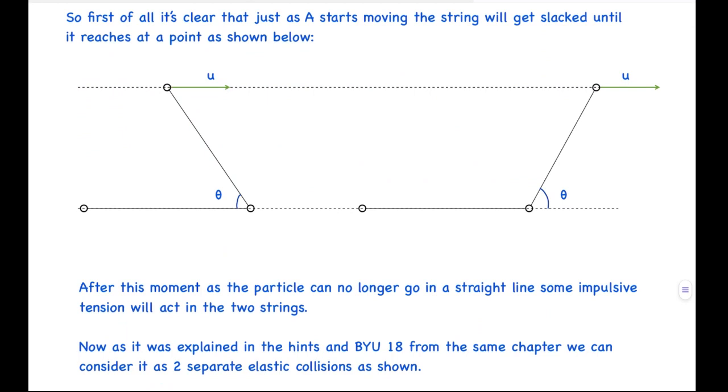First of all, it is clear that just as A starts moving, the string will get slacked until it reaches a point as shown below. Basically, as this ball starts moving, this distance is decreasing so this string will get slacked until it reaches this point where this angle theta is also 60 degrees by symmetry.